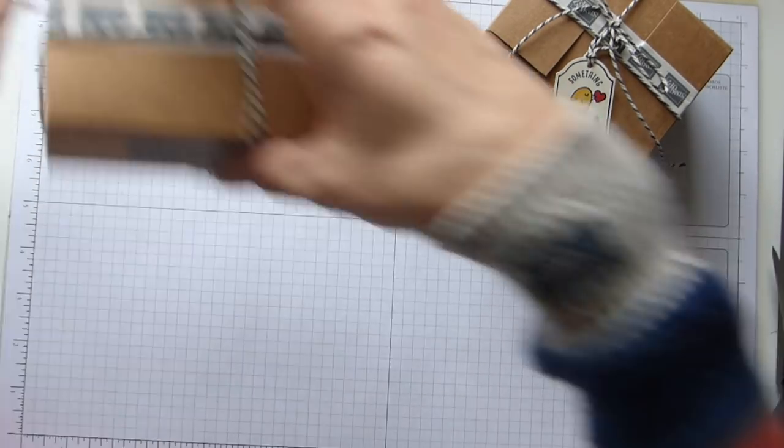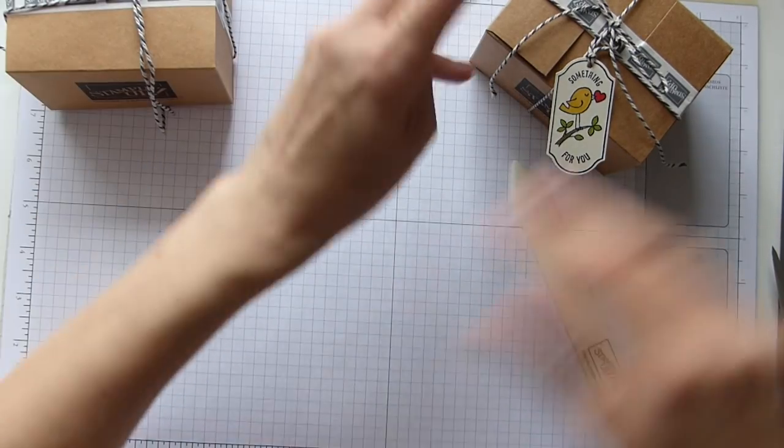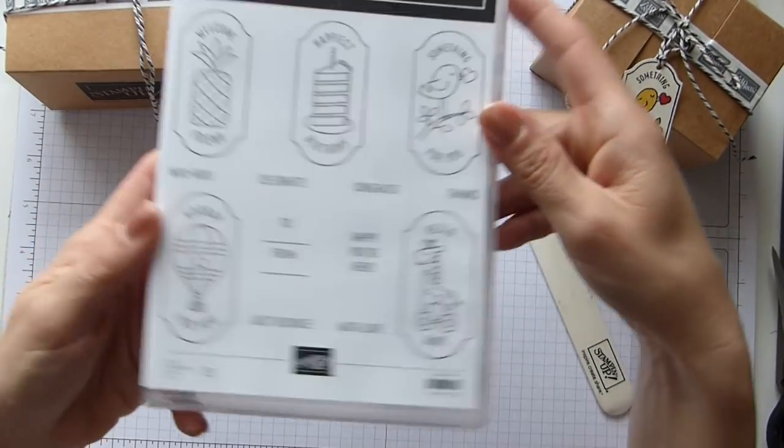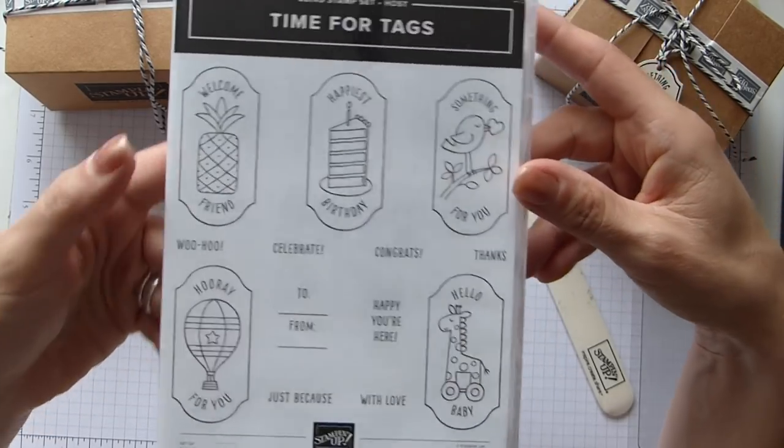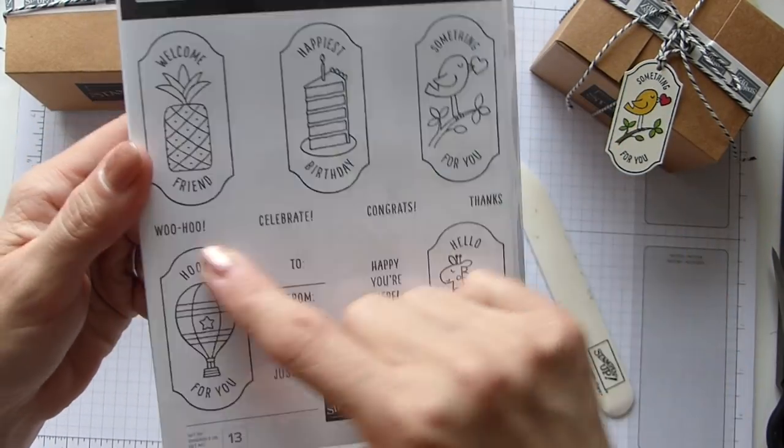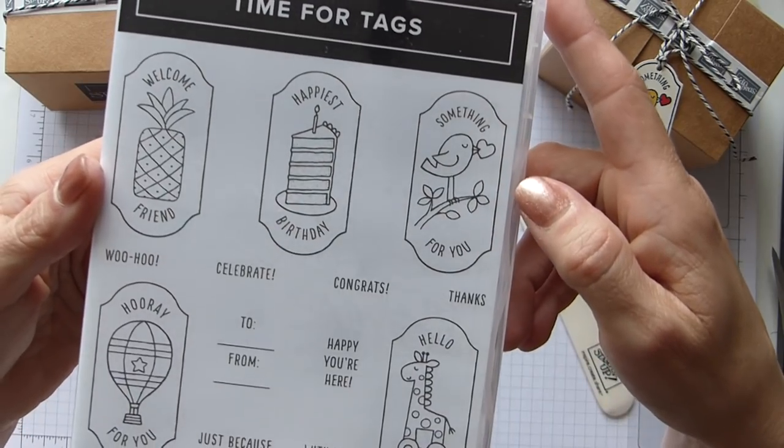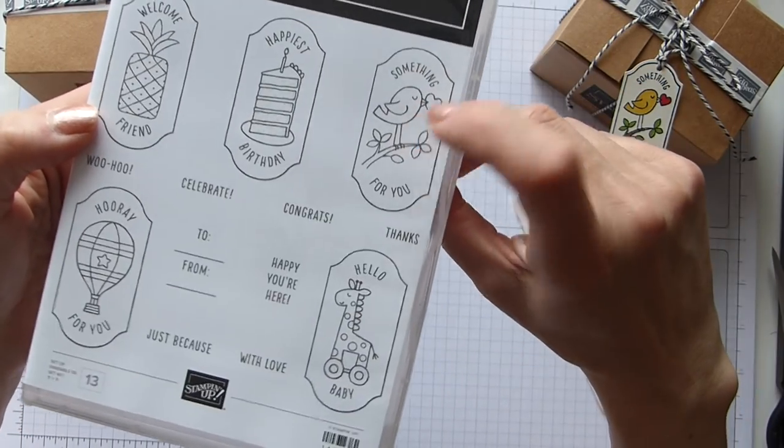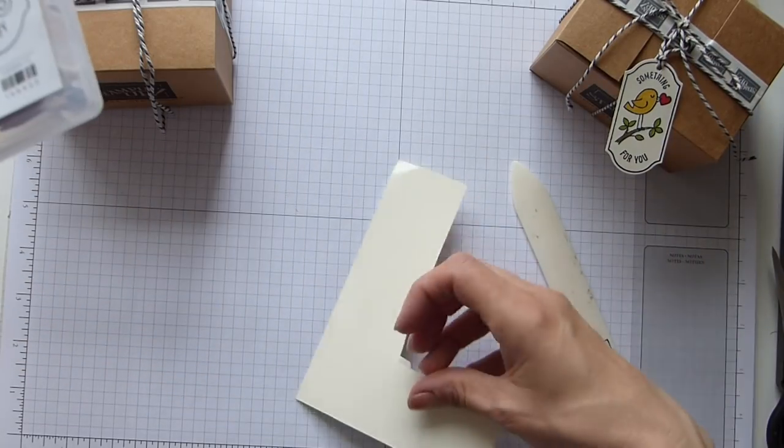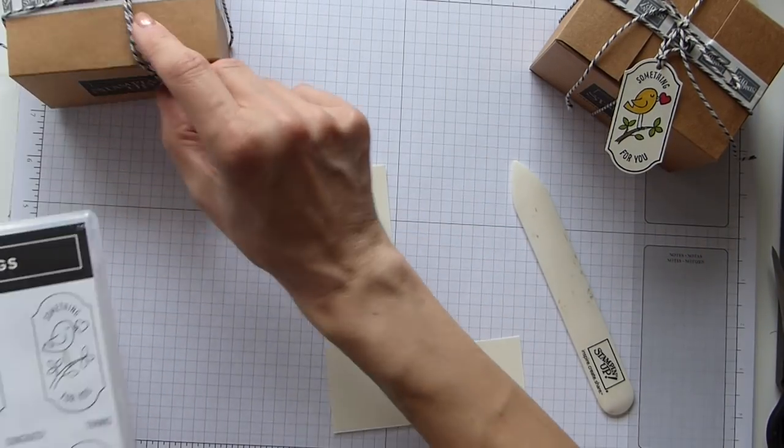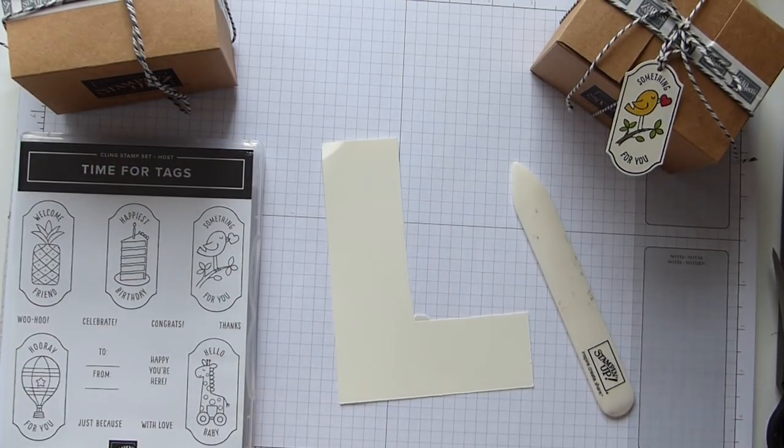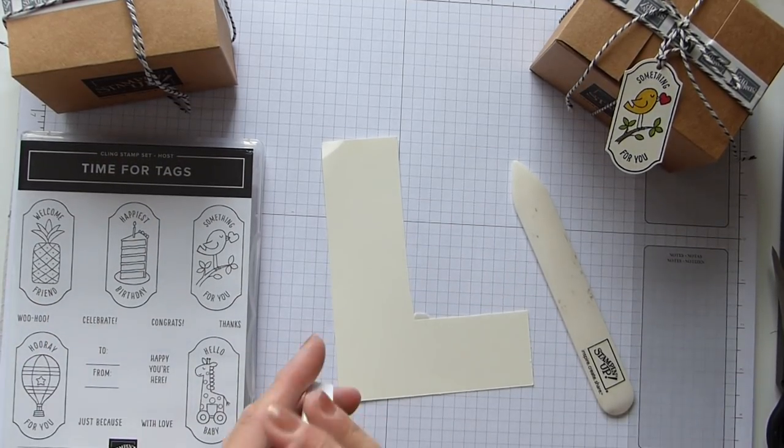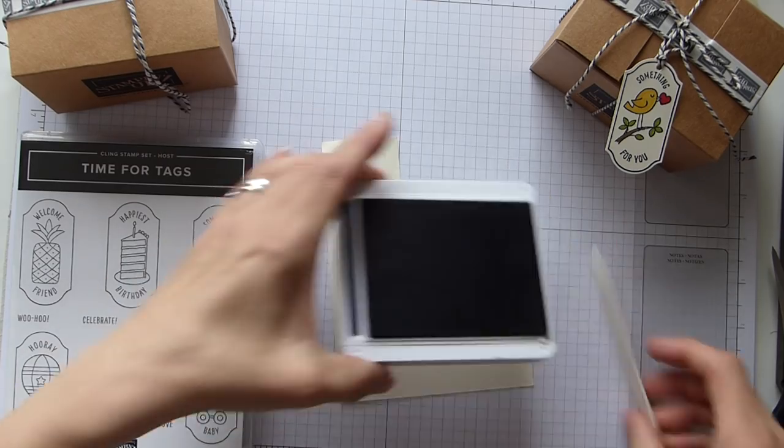A new stamp set that I'm using, this is Time for Tags. Plenty of options, I think it's just fabulous, I love it. I'm going to go with the little bird, something for you. Because it is Night of Navy and Sahara Sand, I went with some Very Vanilla just for a change and I stamped it in Night of Navy.